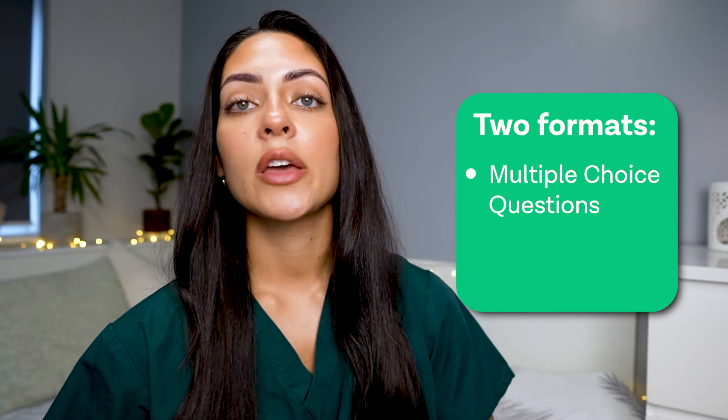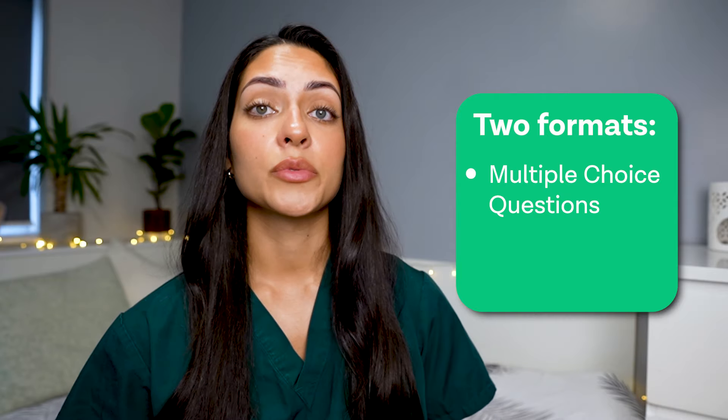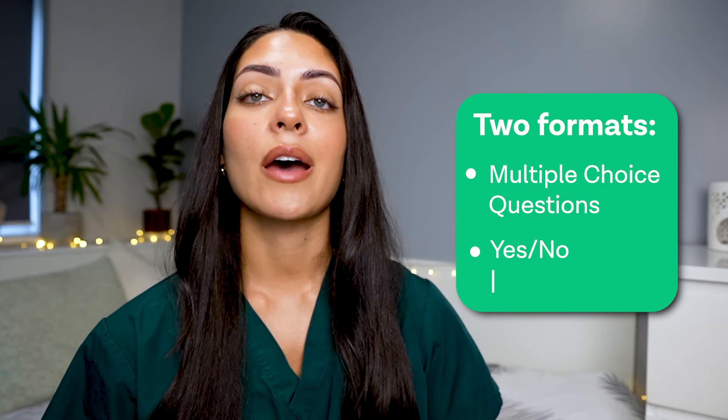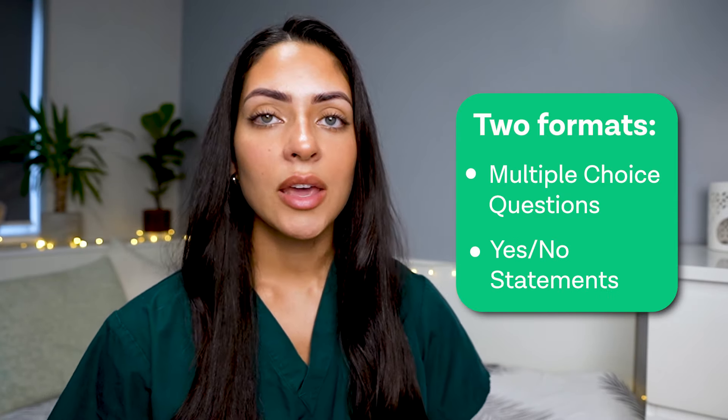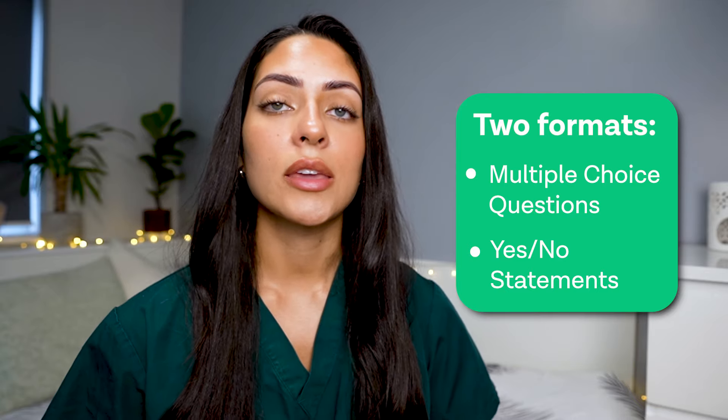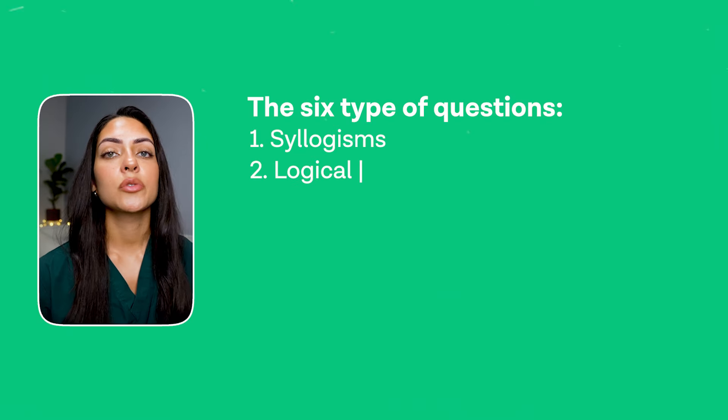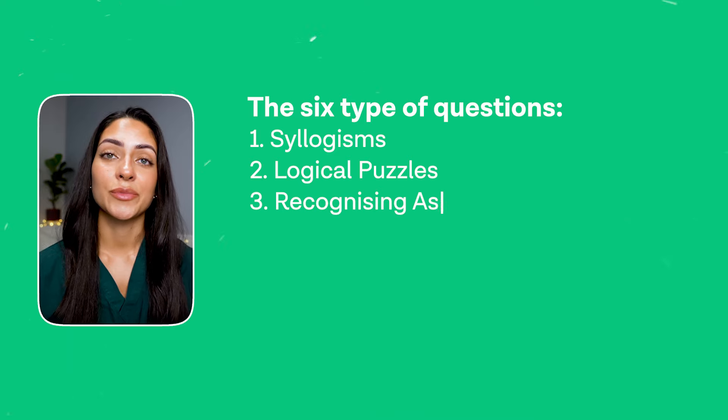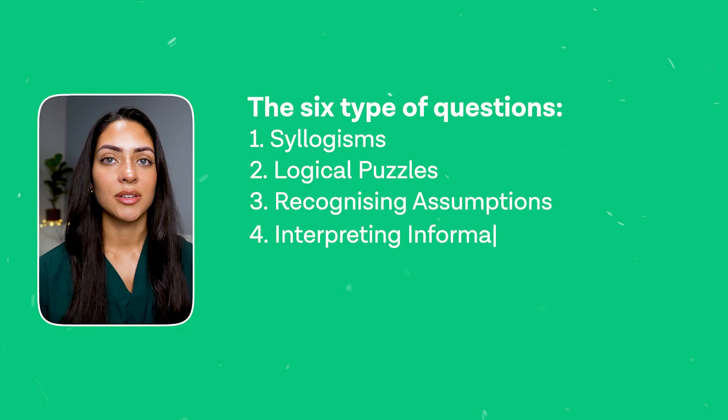Decision making has six different types of questions that are presented in two different formats. The first is multiple choice questions where you'll be given four different answer options and only one will be correct. Or you could have yes or no statements, where you'll be required to drag a yes or a no response next to each statement. The six different types of questions are syllogisms, logical puzzles, recognising assumptions, interpreting information, Venn diagrams and probabilistic reasoning.